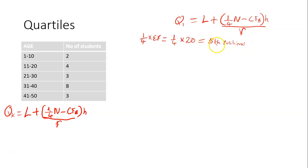So how do we locate the fifth position? You come to the frequencies. The first frequency is 2 — it's not up to the fifth position yet. Add the next frequency to it; when you add it you get 6. Meaning at this point in time, you've gotten to the fifth position and you've even bypassed it. So this particular class becomes the first quartile class.